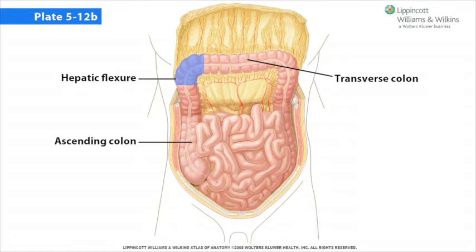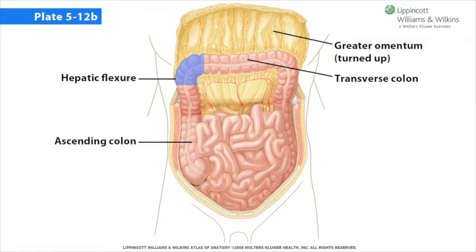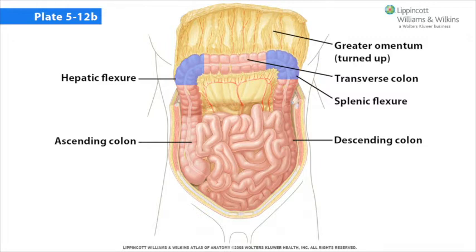The transverse colon is intraperitoneal; its mesentery is called the transverse mesocolon. The greater omentum is suspended from its inferior border. The transverse colon is continuous with the descending colon at the splenic flexure, or left colic flexure, which has a peritoneal attachment to the diaphragm called the phrenicocolic ligament. The descending colon is secondarily retroperitoneal and is continuous with the intraperitoneal sigmoid colon at the left iliac fossa.